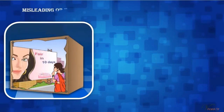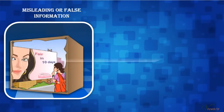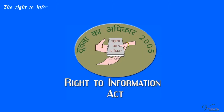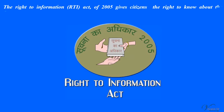In case of any misleading or false information, consumers can take the producer to the consumer court. The Right to Information, RTI Act of 2005, gives citizens the right to know about the functioning of any government department.